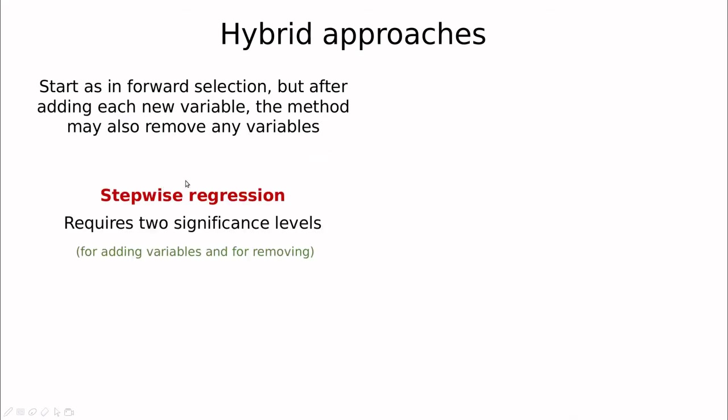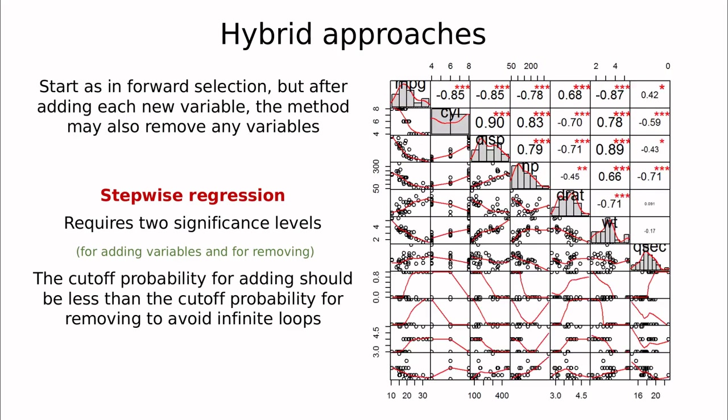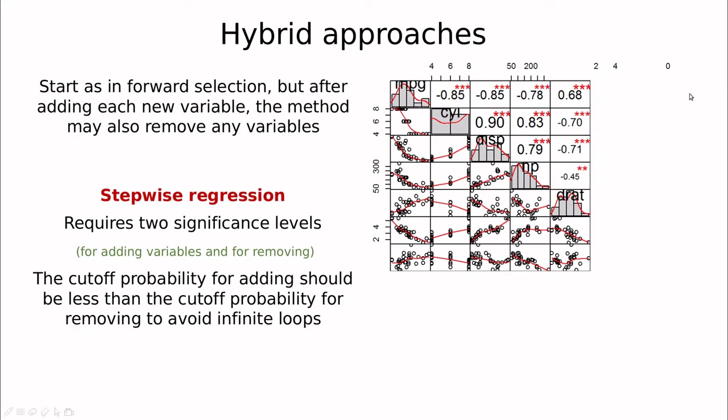One of the most popular is called stepwise regression and you need two significance levels for the root mean square error, one for adding and one for removing. You do that in order to remove loops and the idea is you start increasing but if you go too deep then you have to go back and remove one of those variables so you end up with an optimal subset of the variables.